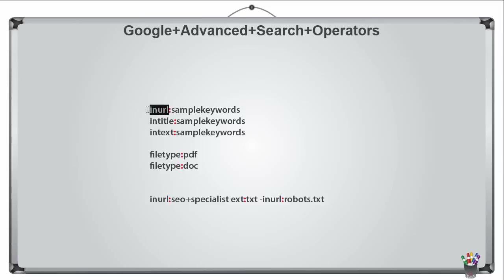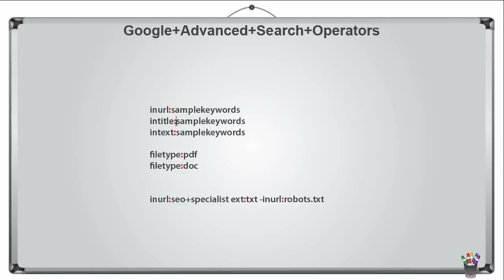The usual ones: 'inURL' means find me whatever keyword you're looking for in the URL — it has to contain that keyword in the URL. Just be aware of this colon here, meaning 'inURL:sample keywords'. The same thing happens with 'intitle' — if you want to find keywords contained in the title of a document, you say 'intitle:sample keywords'. Similarly, 'intext' looks for that keyword in the text of a document. That's what you're telling Google to do — fetch from its database result sets according to what you search.